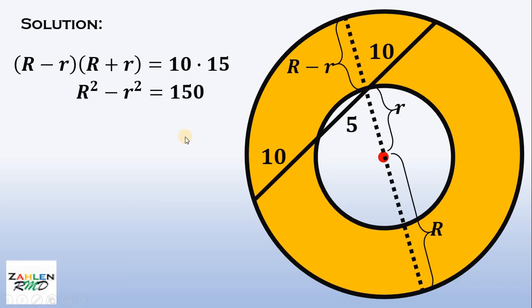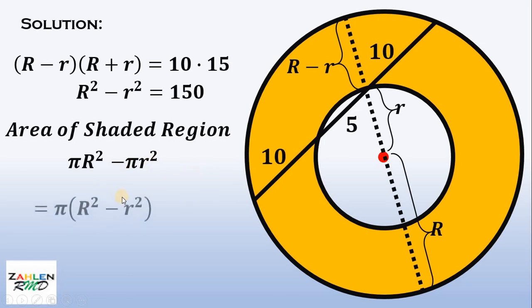Don't forget that we want to find the area of the shaded region. The area of the shaded region equals the area of the big circle, or simply π multiplied by capital R squared, minus the area of the small circle, which is πr squared. We can factor out π, so we have π multiplied by capital R squared minus r squared.